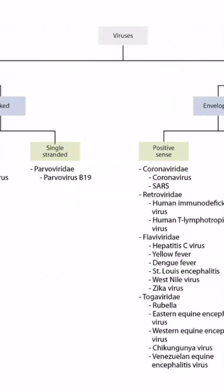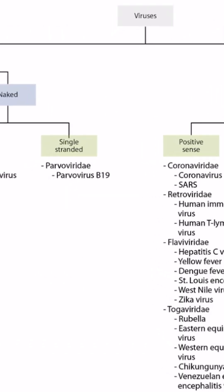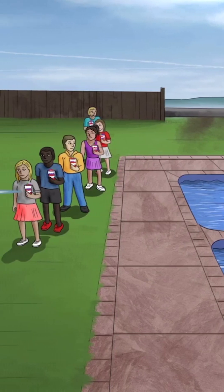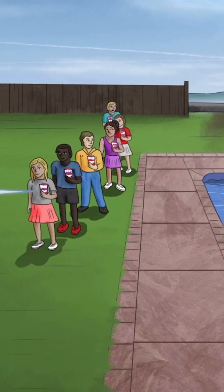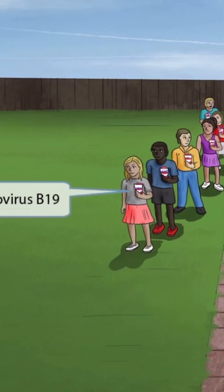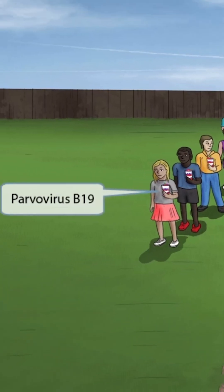This is our virus overview figure, and in this video we'll be discussing parvovirus B19, which you can see right here. This scene will take place at a pool party. All of these kids were invited to the party, and parfaits were handed out to all in attendance, as you can see by all the parfaits in the children's hands. Parfait sounds like parvovirus, which should help you remember that this image is all about parvovirus B19.